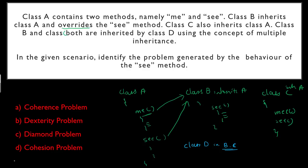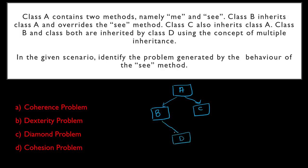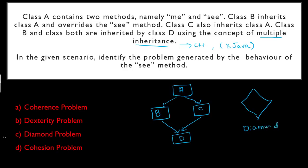When you draw this structure — class A at the top, class B and class C both inheriting from A, and class D inheriting from both B and C — the shape is a diamond. That is why this problem is called the diamond problem. This multiple inheritance is available only in C++; it is not available in Java even though Java is an object-oriented programming language.